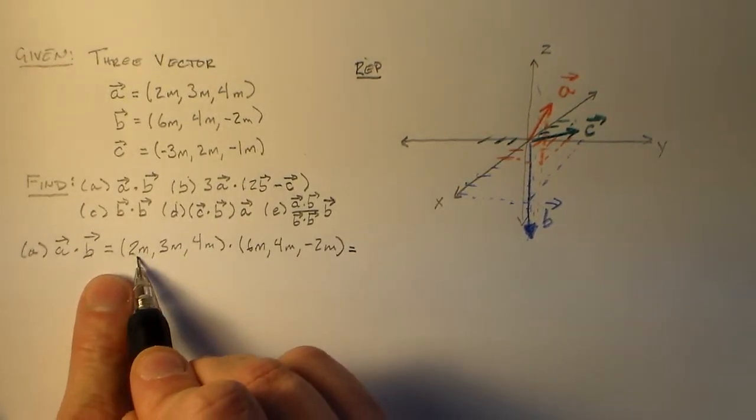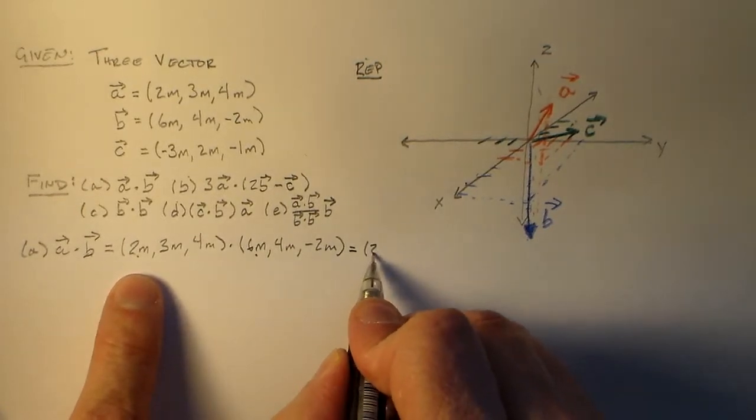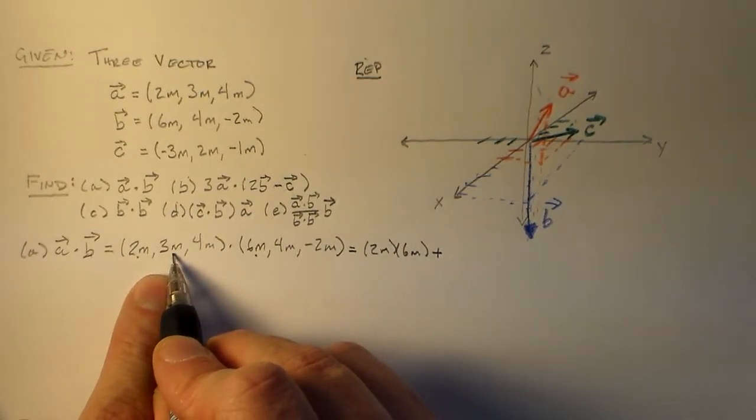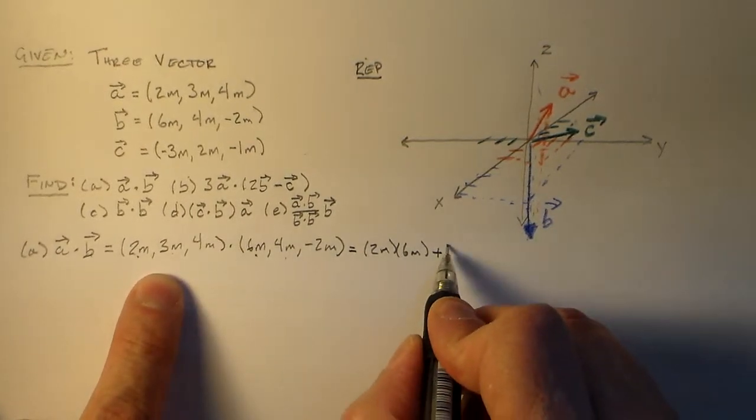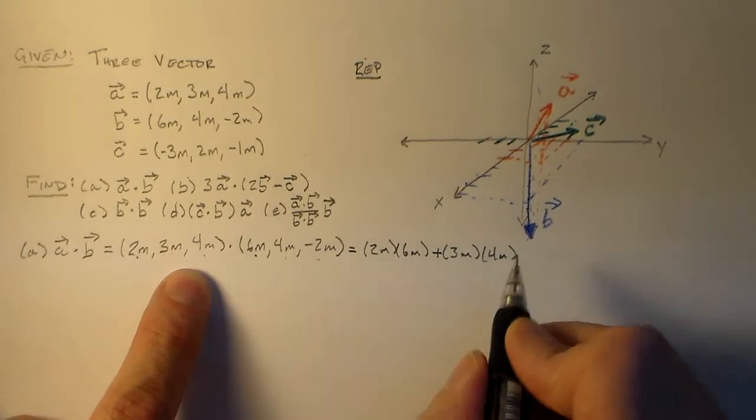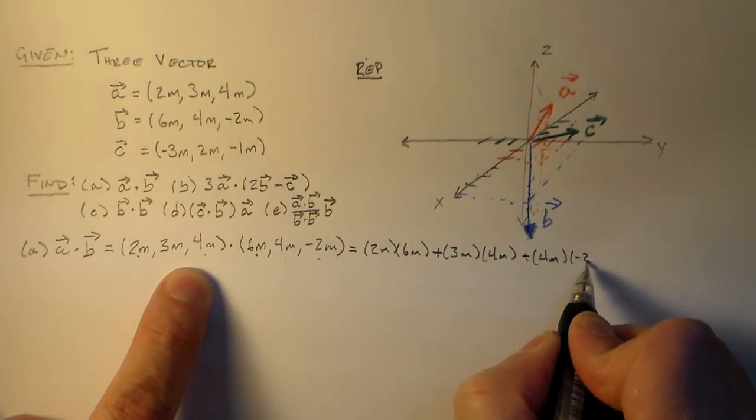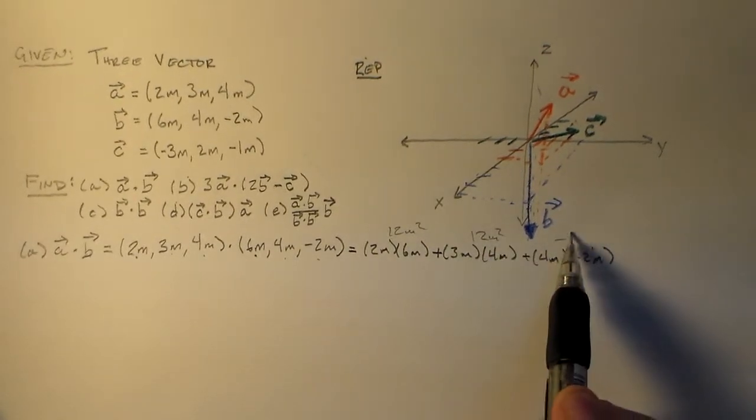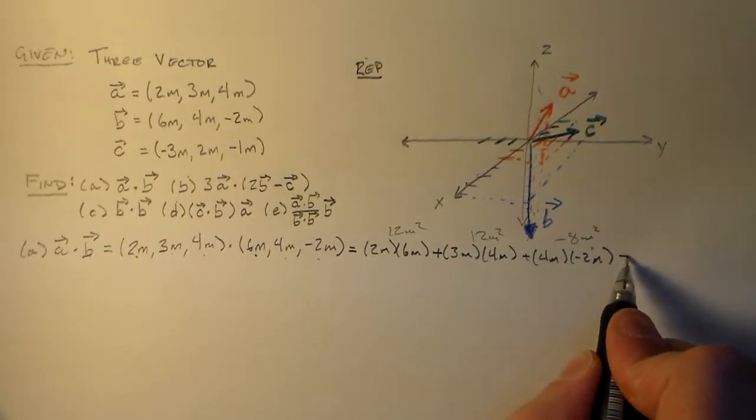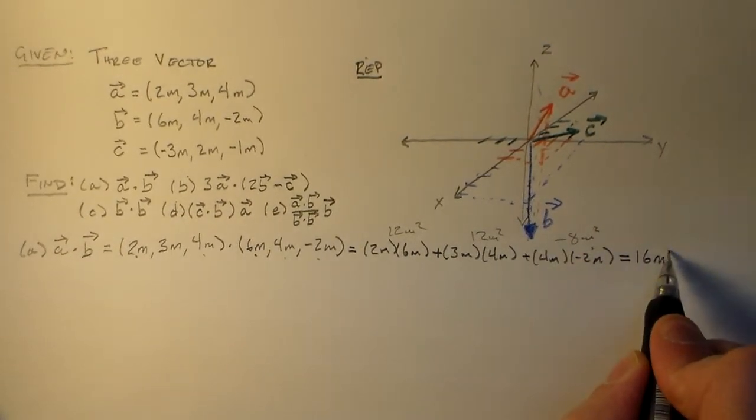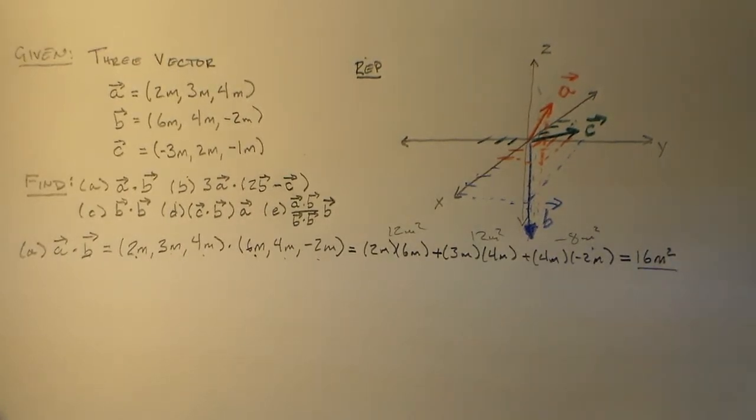So basically, how we do this is we go step by step. For the x's, we multiply the two x components together, so we have two meters by six meters. And then we add in the next set of components, the y components, so that's three meters times four meters. And then we do the same thing for the z, and we add in four meters times minus two meters. This is well within your capabilities already. This is 12 meters squared, this is 12 meters squared, this is minus 8 meters squared, so 24 minus 8. So that's 16 square meters. So that's all there is to it. There's nothing astounding about the dot product.